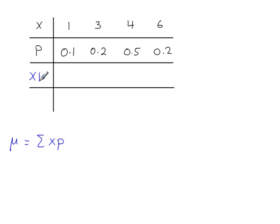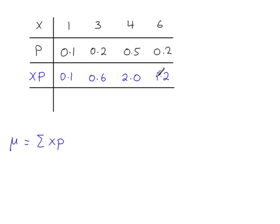So we need an additional row in the table, and then multiply these in pairs. So 1 times 0.1, 3 times 0.2. Once you've worked out the xp values, you need to add these together. So the mean is equal to 3.9.